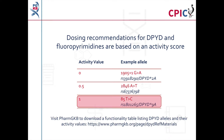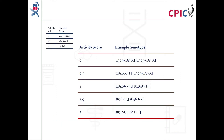PharmGKB provides a DPYD functionality table with a more comprehensive list of DPYD alleles and their activity values. Follow the URL to download the table. The activity values for each allele are then summed to produce an activity score for the DPYD genotype.